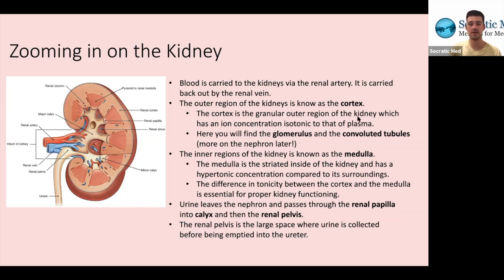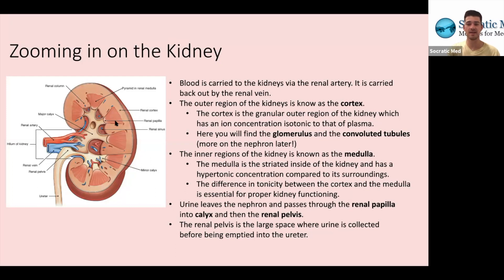In the cortex, you'll find the glomerulus and the convoluted tubules, which are two different parts of the nephron toward the beginning where the filtrate first enters the lumen. The inner regions of the kidney — the darker pinkish areas — are known as the medulla, the innermost striated part of the kidney. It has a hypertonic concentration compared to its surroundings, meaning the medulla is very salty with a very high solute concentration. This helps pull water out of the nephron. The difference in tonicity between the cortex and medulla is essential for proper kidney functioning.